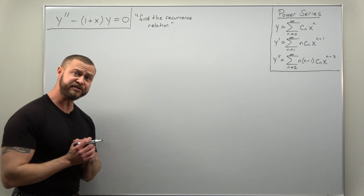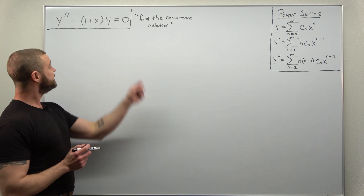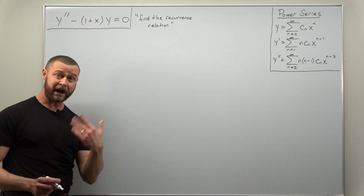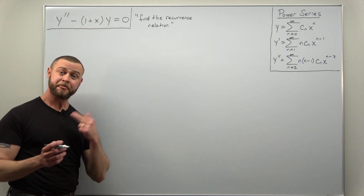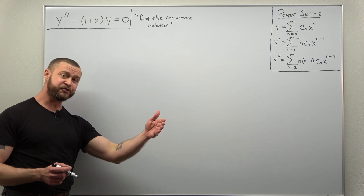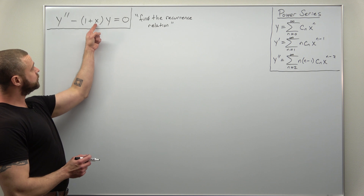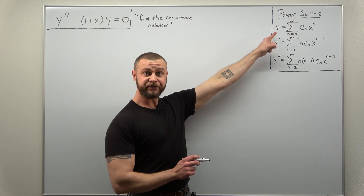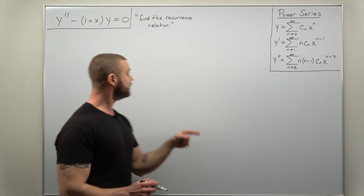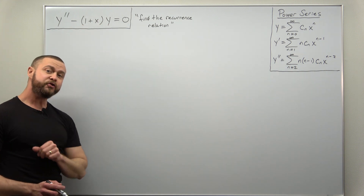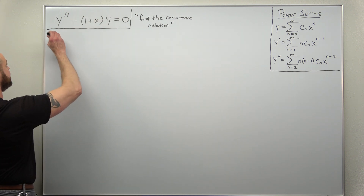It's actually really simple. Your intuition might be guiding you — we're probably tempted to distribute y through the parentheses, and that's exactly what we want to do. It's just going to give us extra power series to deal with. Keep in mind, when you multiply x by your power series for y, you can add the exponents. We're going to get two different power series once we distribute, so let's go ahead and do that.